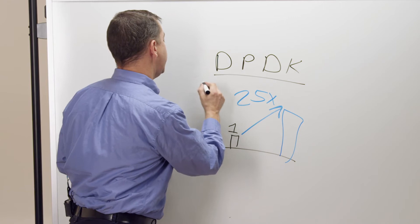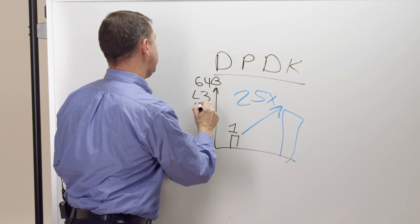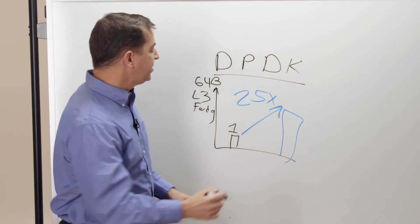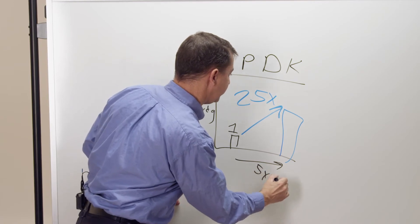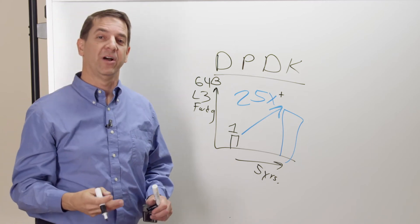And this performance is measuring really small packet performance. So these are 64-byte layer 3 forwarding as a metric to try to see where we're at. And these changes you see here, this 25x performance, happened roughly over the past five years or so. And I should say it's 25x plus because we're constantly improving our software.